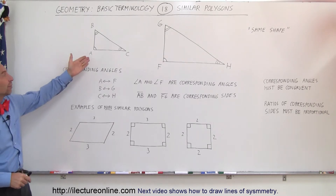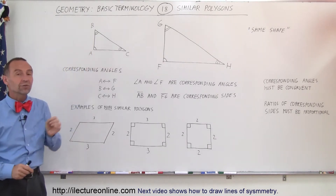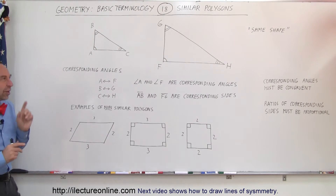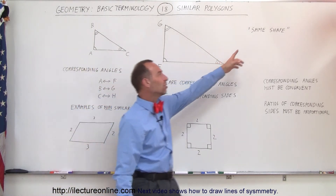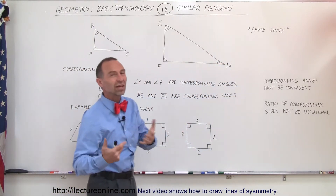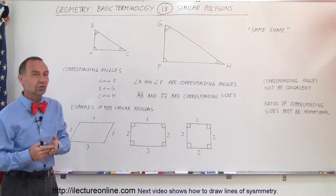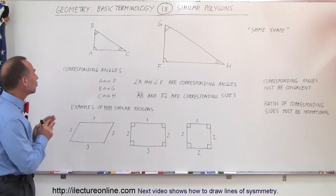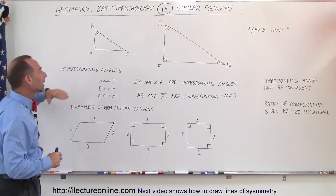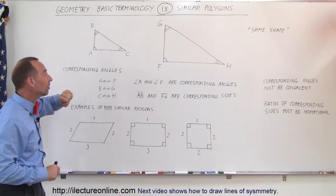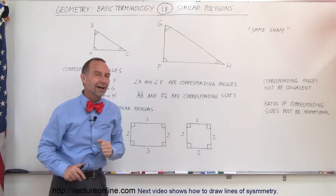Here we have an example of a triangle. There are two triangles and they're similar triangles. Similar means that they have the same shape. Before we get into what that means, we need to understand the word corresponding — we have corresponding angles and we have corresponding sides.